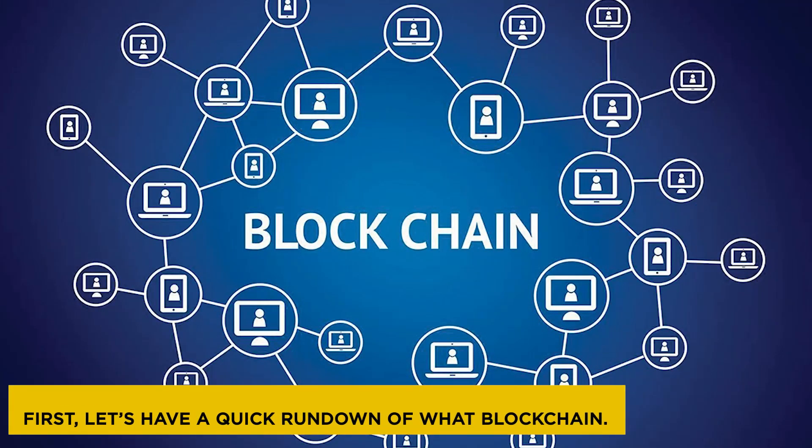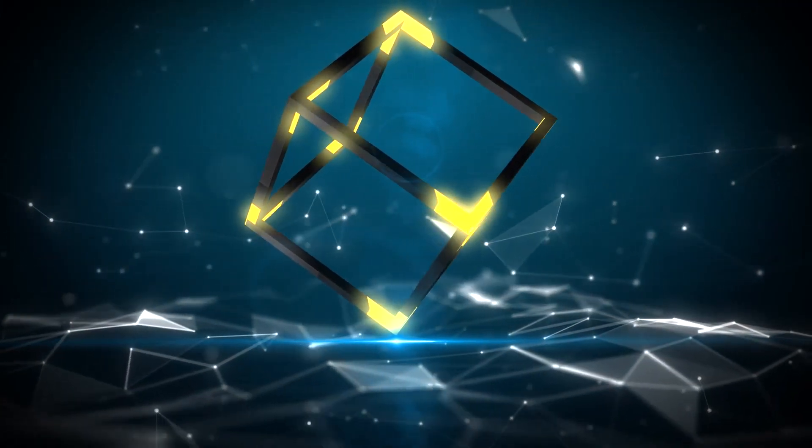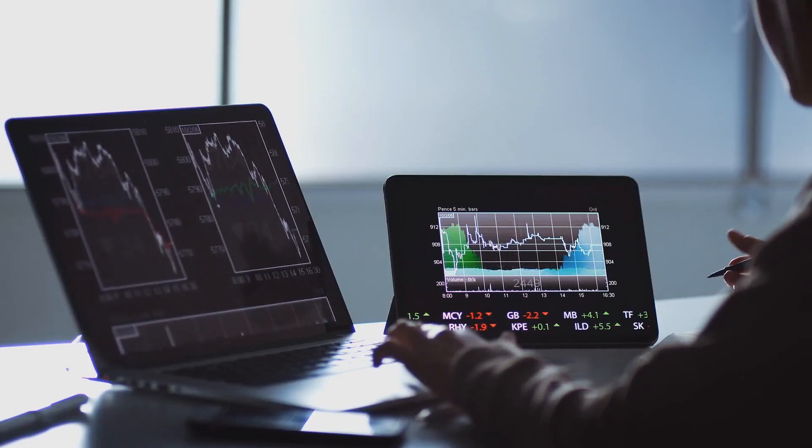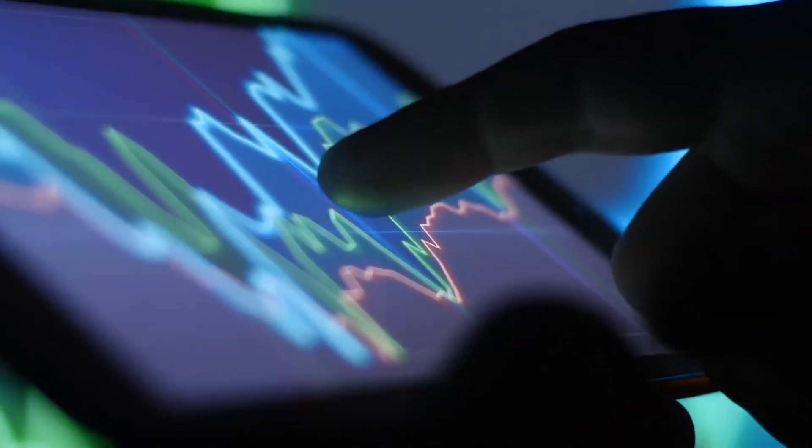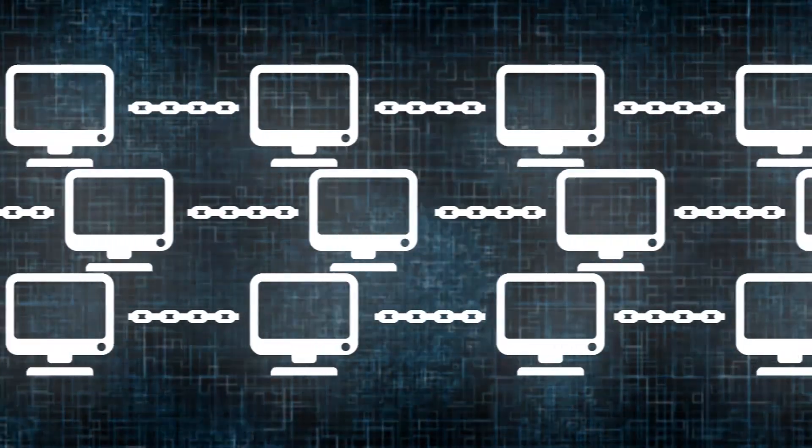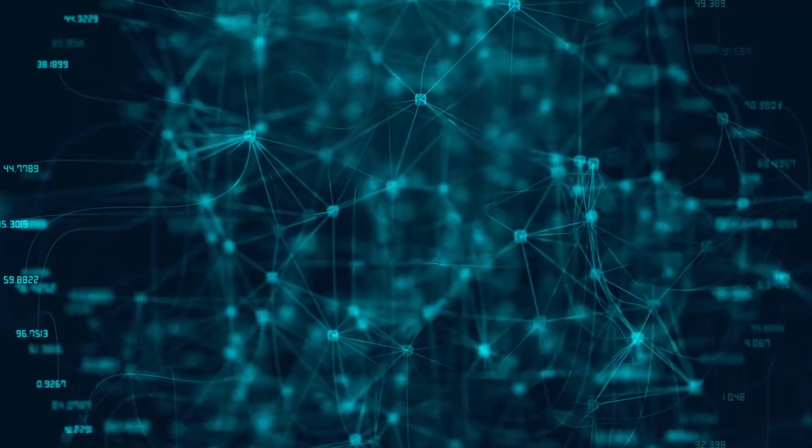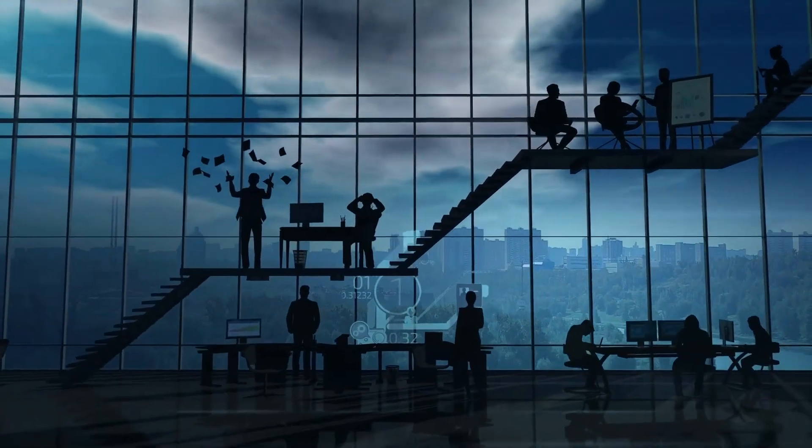First, let's have a quick rundown of what blockchain is. Understanding blockchain is essential to comprehend how cryptocurrencies operate. However, its uses are not just restricted to crypto. In a shared ledger, the blockchain is a database that houses data from transactional records. On the blockchain, assets are traded and tracked, lowering risk and expenses for all parties.